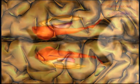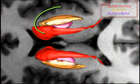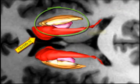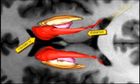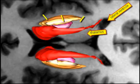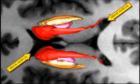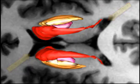The lentiform nucleus consists of the putamen in gold and the globus pallidus in pink. The caudate nucleus arches over the lentiform nucleus and there is always white matter in between, except ventrally and rostrally where the gray matter of the lentiform nucleus and the head of the caudate are continuous.